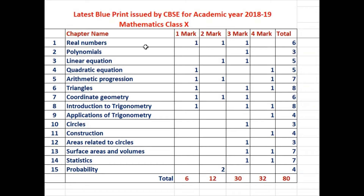The first chapter, Real Numbers: 1 question of 1 mark, 1 question of 2 marks, and 1 question of 3 marks — a total of 6 marks will be asked. From Polynomials, only 1 question of 3 marks will be asked. From Pair of Linear Equations, 1 question of 2 marks and 1 question of 3 marks — a total of 5 marks will be asked.